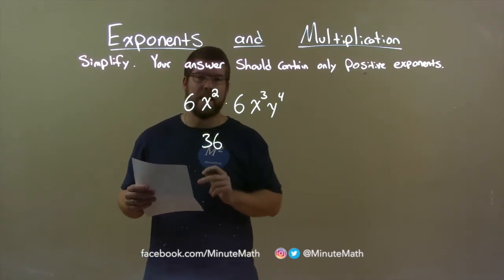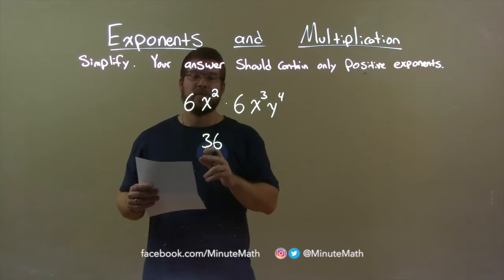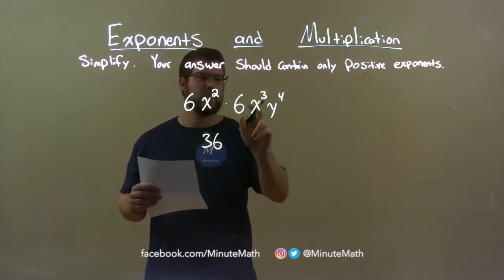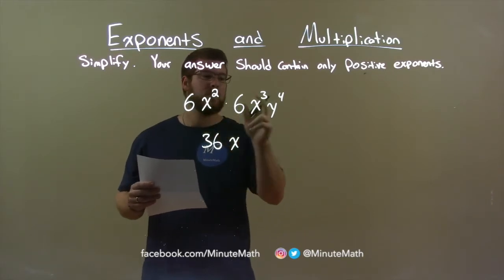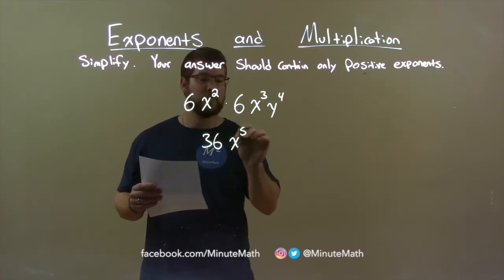The next variable I see is an x. We can only multiply like variables. x squared times x to the third, well, we look at the exponents and we add them. 2 plus 3 is 5, so it's x to the fifth power.